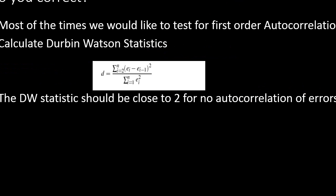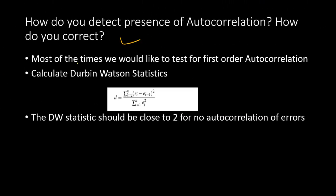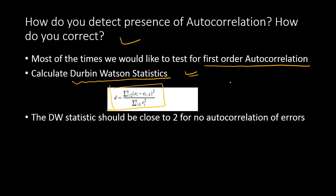How do you detect and correct autocorrelation? Most of the time we encounter first-order autocorrelation, which can be detected using the Durbin-Watson test. The Durbin-Watson statistic uses errors from two different series, E_i and E_{i-1}, to assess AR(1) autocorrelation. The rule of thumb is that if the Durbin-Watson statistic is close to 2, there is no autocorrelation; otherwise autocorrelation is present.